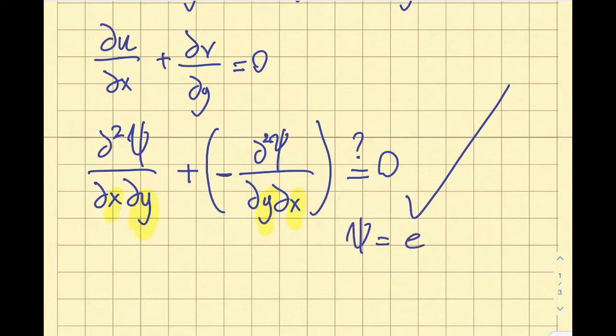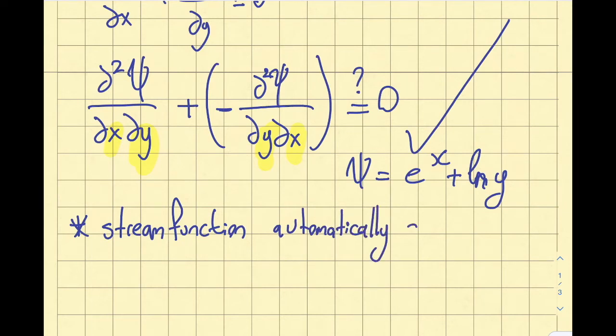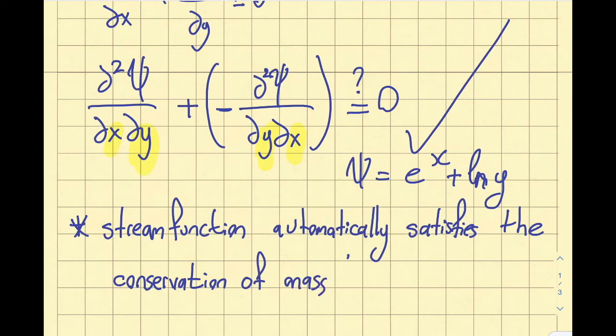This equation is always satisfied whatever the function ψ is. The ψ itself can be a fairly complicated function. It can be e to the power of x plus ln of y, as an example. Natural logarithm of y, right? So in an exam setting, or homework setting, or if I'm interested in finding whether conservation of mass is satisfied, this is automatically satisfied. We don't have to do any mathematics. So let's just note that down. This is a very important point I want you to understand.